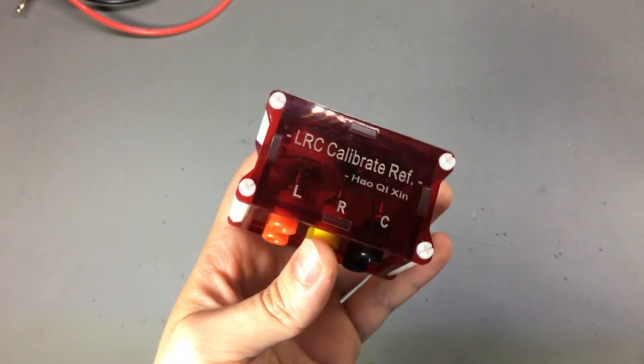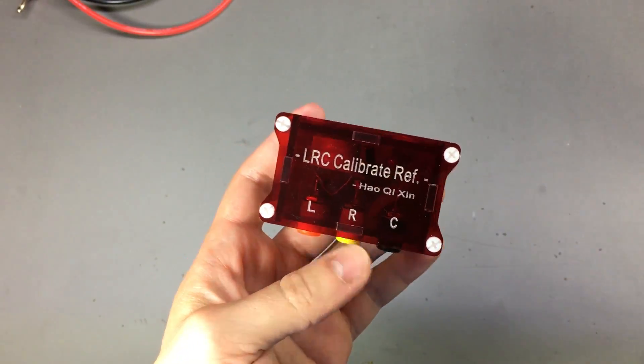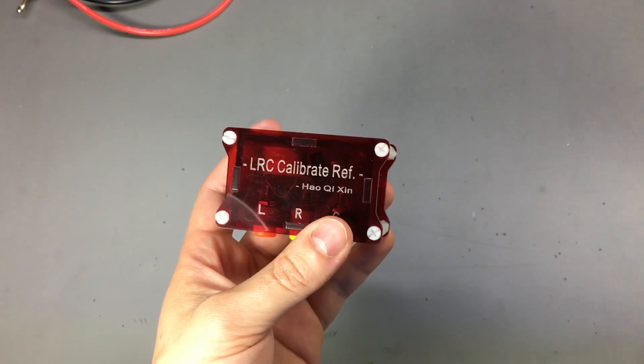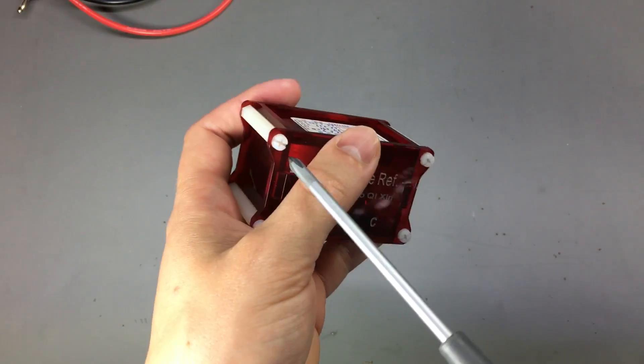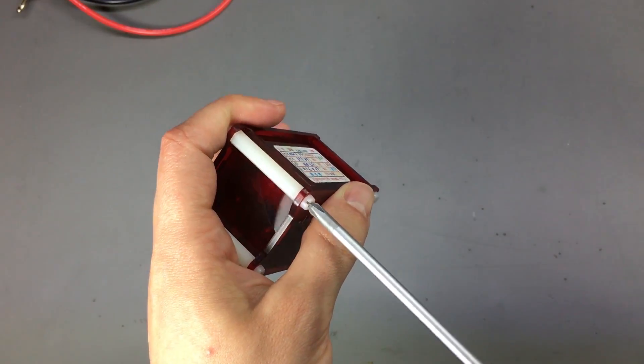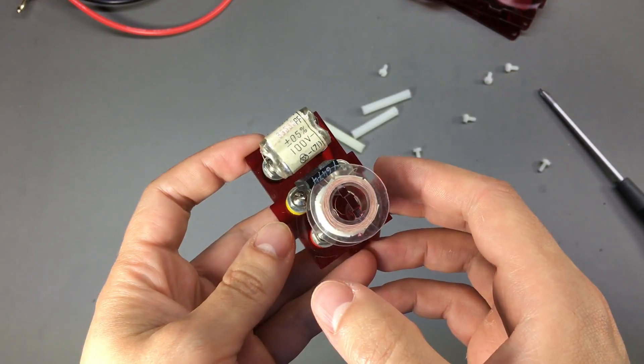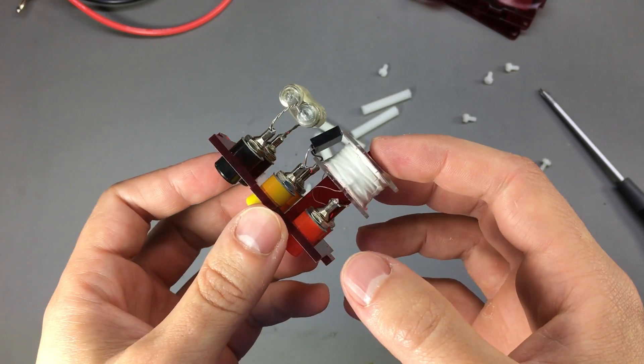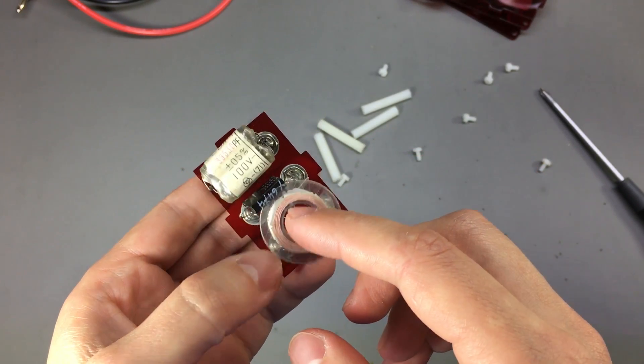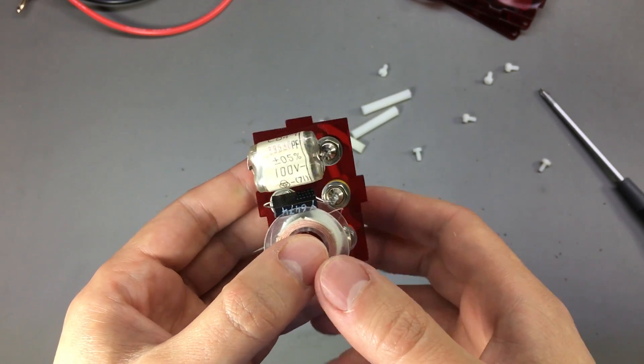So now let's open the box and take a closer look at the parts used inside this reference box. We only have these plastic screws holding it together. Interesting construction technique. They used another piece of acrylic to hold the inductor.